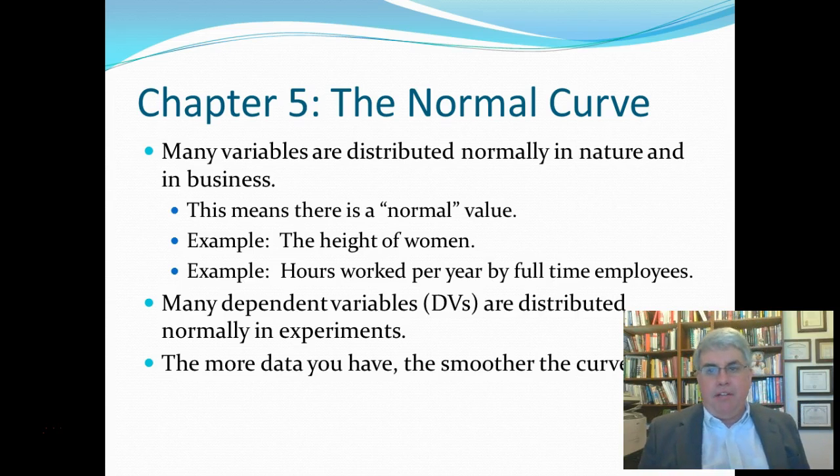Now, whenever we have lots and lots of data, we'll start getting a normal score that's smoother and smoother. If we just have a few pieces of data, it'll look a little rough, but we'll still usually get something that looks like a normal curve.